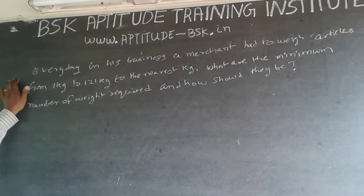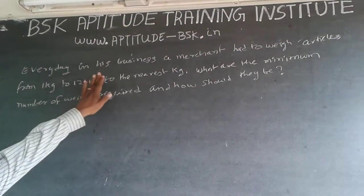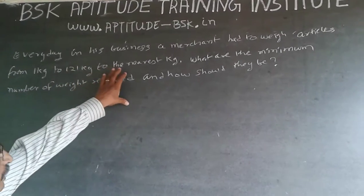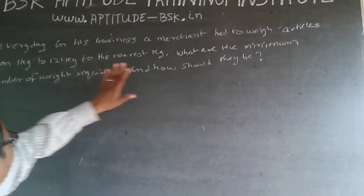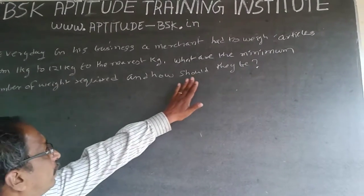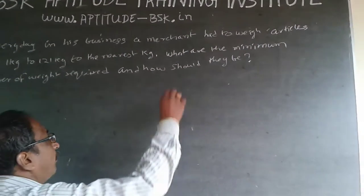The question is: Every day in his business, a merchant had to weigh articles from 1 kg to 120 kg, to the nearest kg. What are the minimum number of weights required and how heavy should they be?